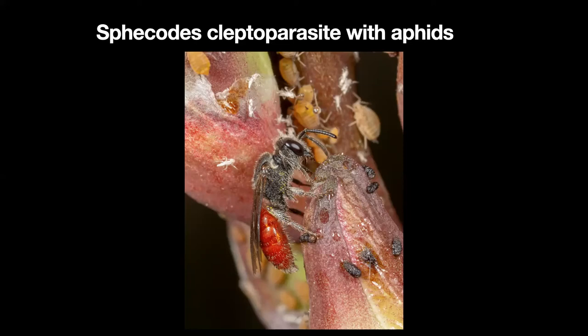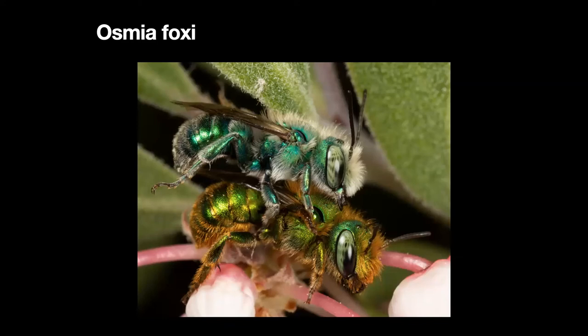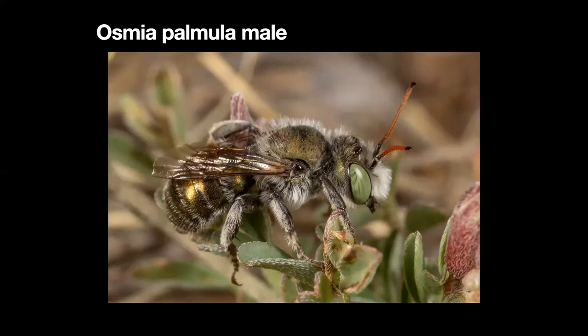Here you have a pair of Osmia — these are native bees, Osmia foxi — and they're quite rare and not out very long. Here you have Osmia palmella, which has a really small range and is probably quite endangered. We have them around the edges of the Huachucas and I don't know how much further they extend. I've never seen a female.